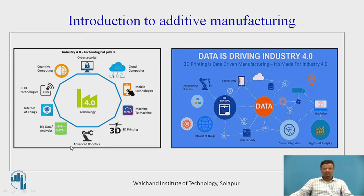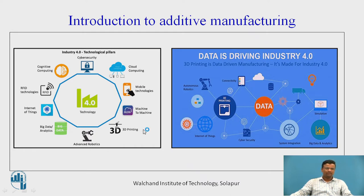With respect to the mechanical field, Industry 4.0 also consists of two main components like advanced robotics, which is a main material handling system component. All these technologies are co-related — for example, IoT is co-related to 3D printing, and big data or huge data can be provided to robotics. Mainly, 3D printing is one of the key components.